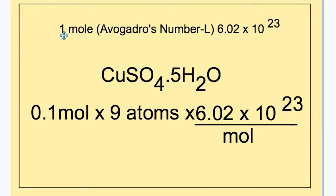First you must note that 1 mole, or the Avogadro's number, is equal to 6.02 by 10 to the power of 23. And here in the case of copper sulfate, we are required to know how many atoms of oxygen are in 0.1 of a mole.